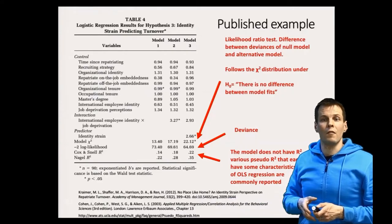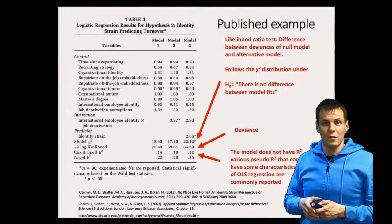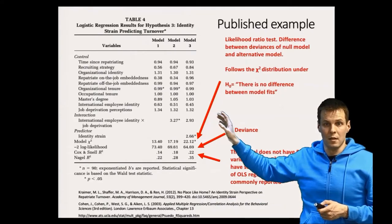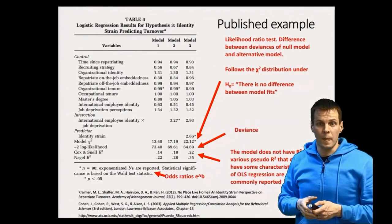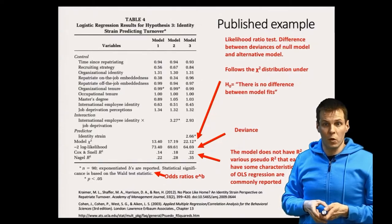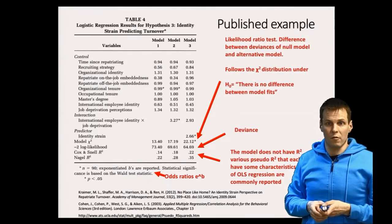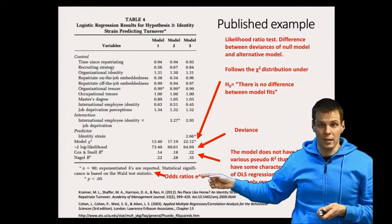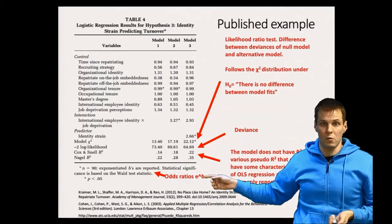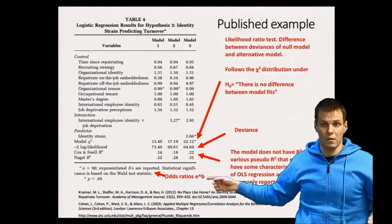Then we also have odds ratios in this paper. So the table text tells us that exponentiated betas are reported. It would be a lot more straightforward to say that odds ratios are reported, less jargon, but these guys decided that they will instead of saying that they have odds ratios they explain how odds ratios are calculated.